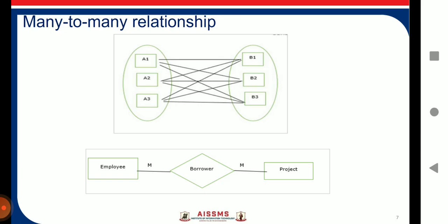In many-to-many cardinality mapping, an entity in A is associated with any number of entities in B, and an entity in B is associated with any number of entities in A. An example is many employees work on many multiple projects.